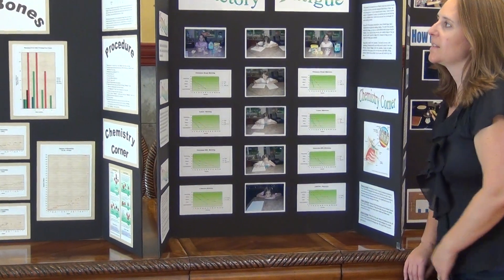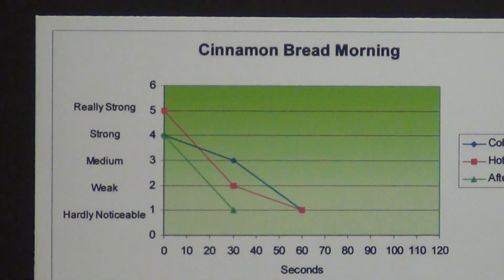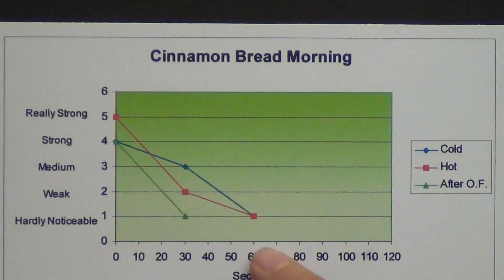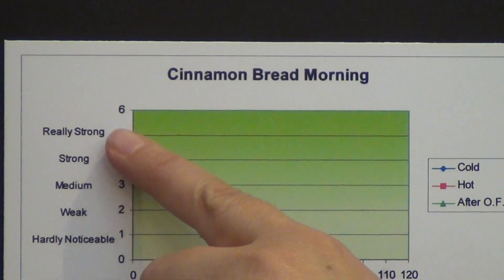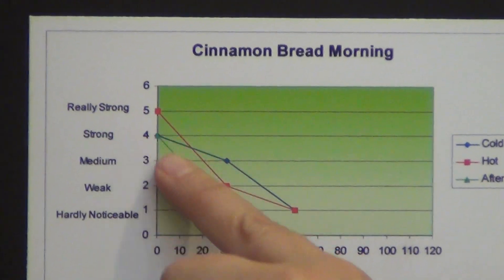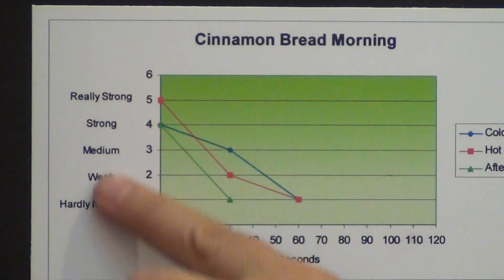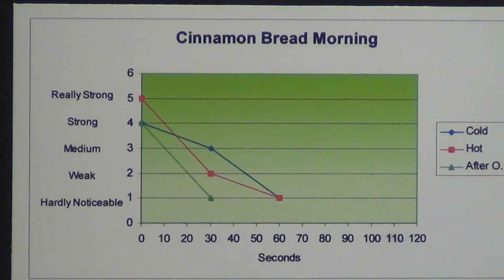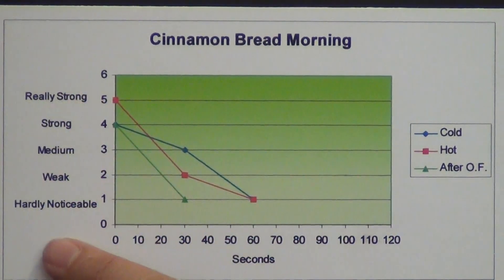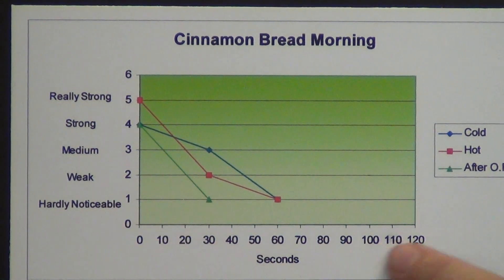On this project, the question was: what causes smells to dwindle the fastest? She chose to use line charts because it was showing a continuous time — how many seconds went for each one. For the cinnamon bread in the morning, the smell went from really strong and then at 60 to 70 seconds it was down to hardly noticeable. She used words like really strong, strong, medium, weak, and hardly noticeable to describe how the smell changed, and charted that by how many seconds.